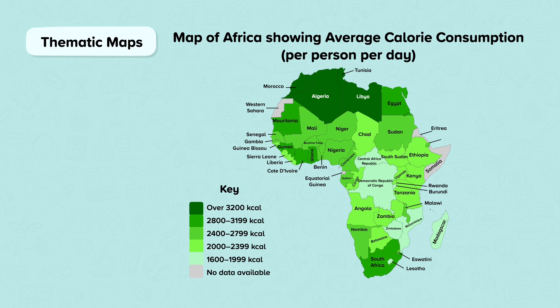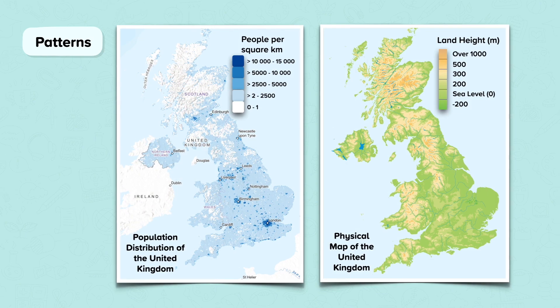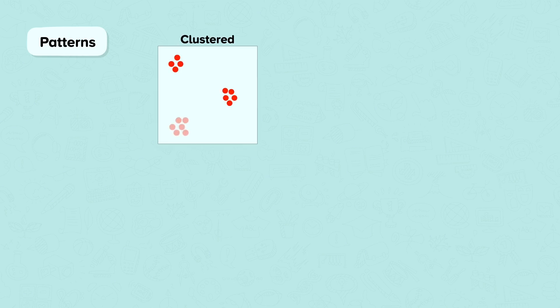You will need to be able to recognise and describe the patterns shown by these maps at different scales. A pattern means there is some regularity or connection between features and their location, for example population distribution and relief. If you want to describe the pattern, some of the terms you can use are clustered, when points on a map are concentrated into small groups, perhaps settlements.